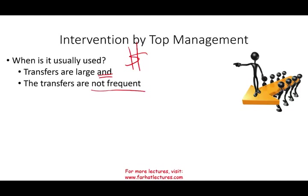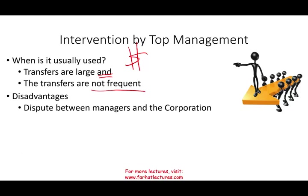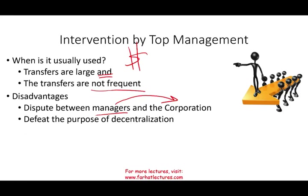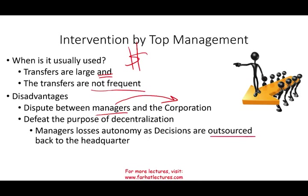The disadvantage is that some managers feel they lost autonomy because decision making is taken away from them. You could have disputes between managers and the corporate office because they're not happy with the decision. It defeats the purpose of decentralization — managers lose their autonomy and decision-making process, which is outsourced back to the headquarter. There's a loss of control, which is not good for motivation.